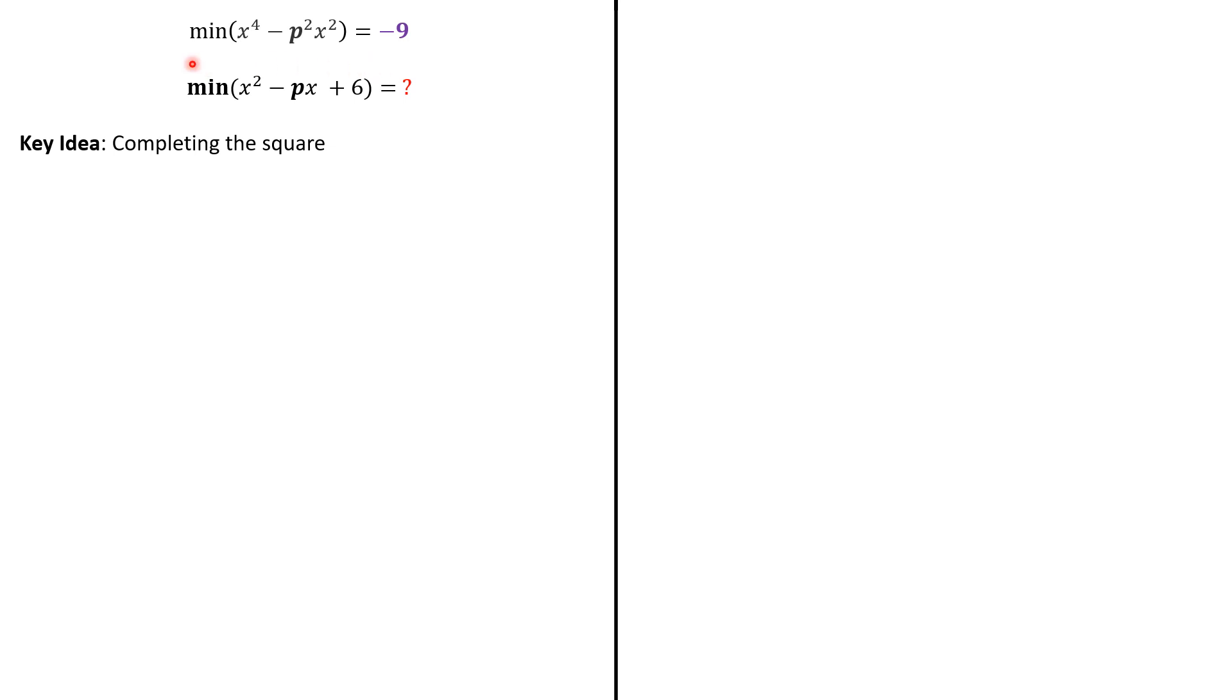We'll try to use the completing the square method. First we notice that x⁴ is the square of x². And we just have to add the factor 2, and we adjust to have p²/2. That's good. Now, what we do next? We are looking for the square of p²/2.